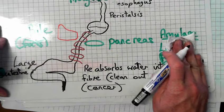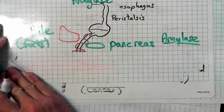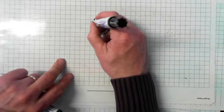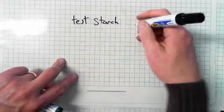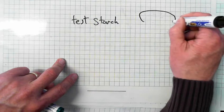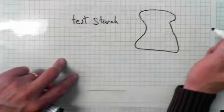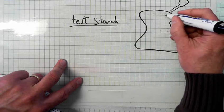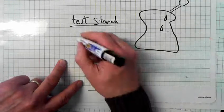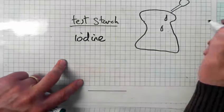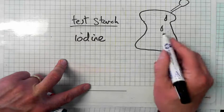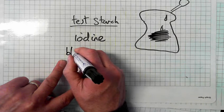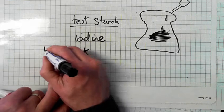How do we test for starch? Starch is like potato or bread. If we had bread, how do we prove that it's starch? We add drops of iodine. What color will it turn if it's starch? It will turn a blue-black color.